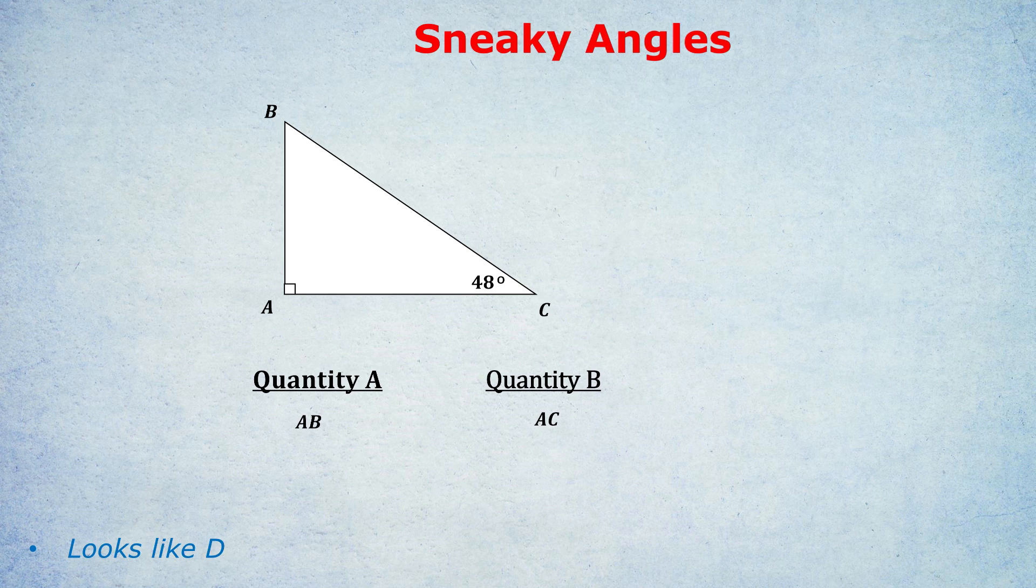Why? There are no numbers here. We don't know any of the lengths AB, AC, BC and so how can we possibly work this out? Here's where my trick comes in.